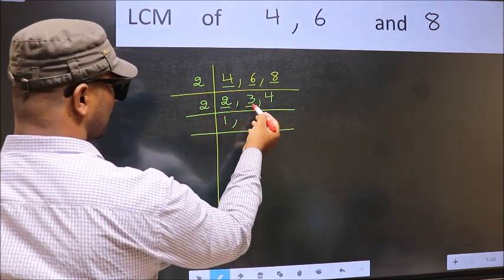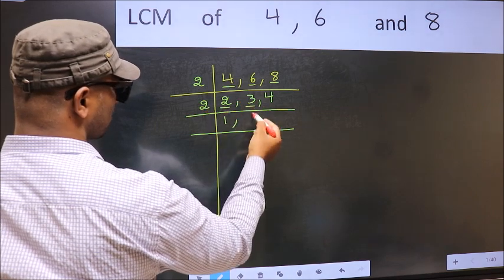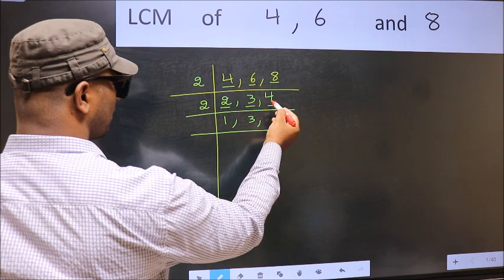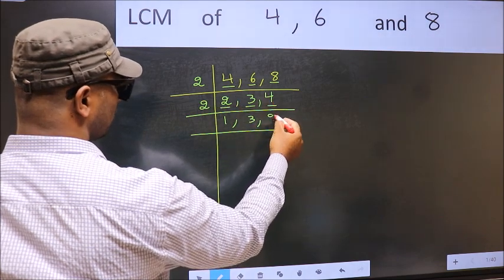The other number 3. Not divisible by 2. So we write it down as it is. The other number 4. When do we get 4 in 2 table? 2 2s, 4.